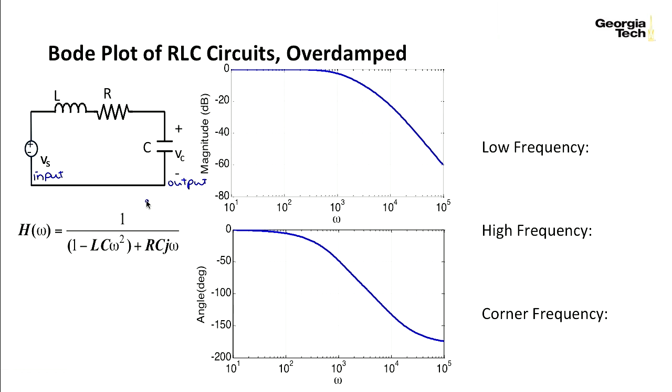Now, I can take 20 times the log of the magnitude and plot that here. And then I can also take the angle of the transfer function and plot it here. And if the circuit is overdamped, I will get this sort of behavior.